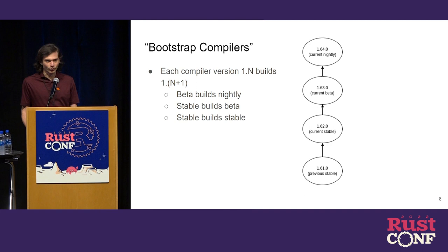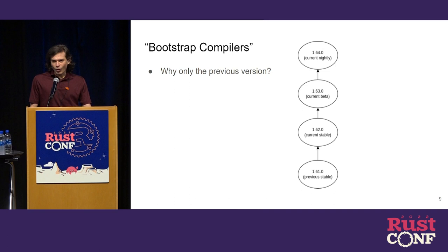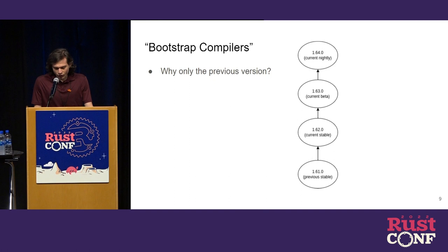You might ask, why are we going one at a time? Wouldn't it be simpler if we just had one version of the Rust compiler that we always used, pinned that in place, and never needed to update it? Well, the problem with that is that we use unstable features in the compiler.